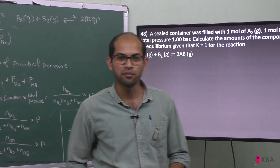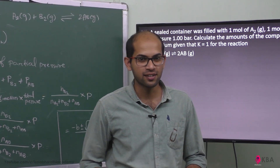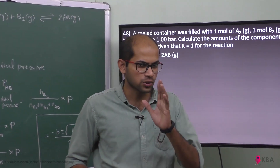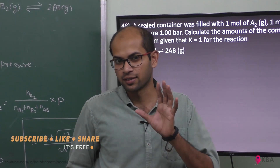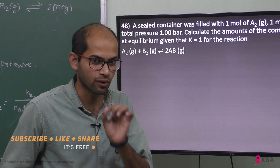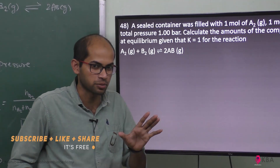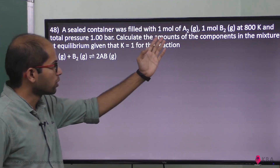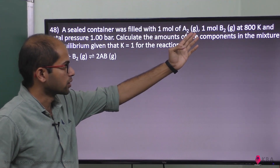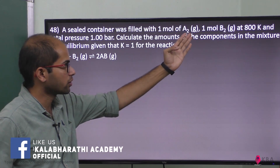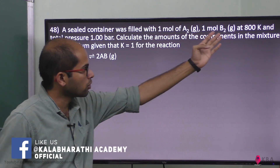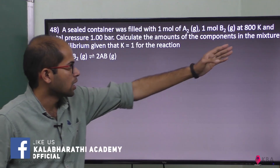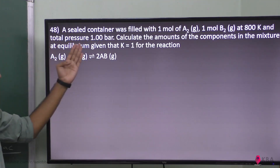In this video, we will talk about question number 48 in the physical and chemical equilibrium chapter. A sealed container was filled with 1 mole of A₂ gas and 1 mole of B₂ gas at 800 Kelvin and total pressure 1 bar.